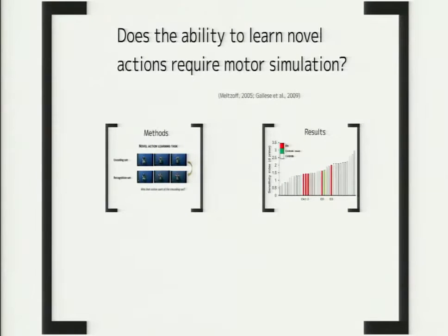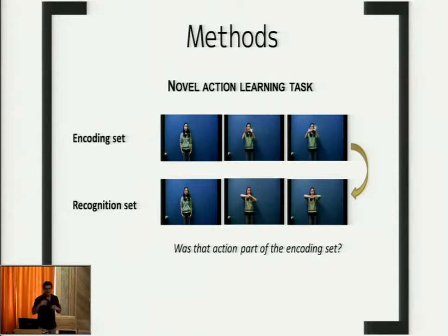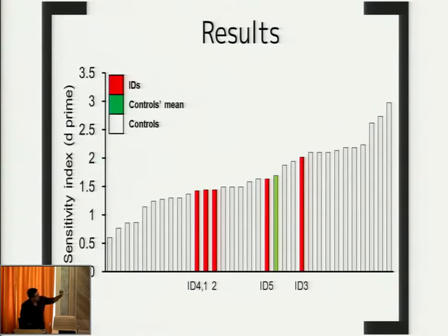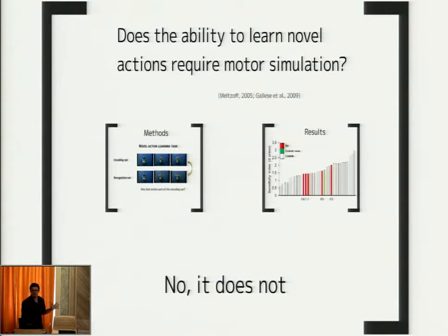Another possibility is that we need motor simulation not to recognize actions, but to learn to recognize actions. To test that, we asked our participants to memorize 21 video clips of an actress performing meaningless gestures with her upper limbs, then recognize these 21 clips among 21 other video clips showing very similar movements. The performance of the participants — shown on the x-axis with sensitivity D-prime on the y-axis — makes it very clear that the dysplastic participants did not differ from the controls. It looks like we do not need motor simulation to be very efficient at learning to recognize new actions.